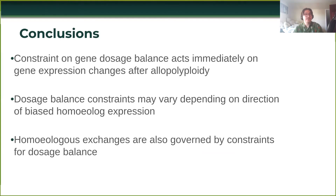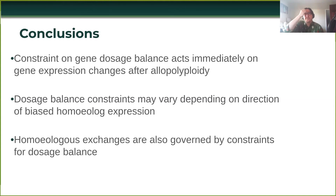The conclusions of this work are: it appears that constraints on gene dosage act immediately on gene expression changes after allopolyploidy, as they do in autopolyploidy. The dosage balance constraints may vary depending on the direction of biased homeologous expression, which is new and exciting. And homeologous exchanges are also governed by constraints of dosage balance, which is also a new result as far as I can tell from the literature.